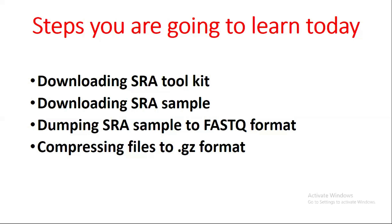In this video, the steps you are going to learn today are: first, downloading SRA Toolkit, which is important for downloading the data; second, downloading an SRA sample — we will download a single sample, paired-end; third, dumping the SRA sample to FASTQ format; and fourth, compressing files to .gz format. These four steps are very important to download FASTQ files related to RNA-seq.